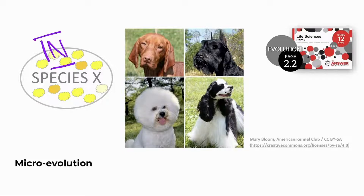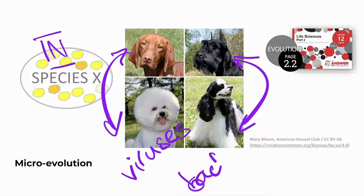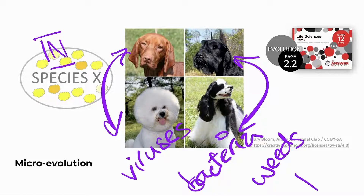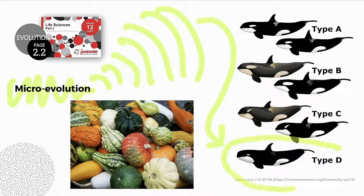How do we know if organisms are part of one species? When organisms are still able to interbreed and produce viable or fertile offspring, they are considered one species. Examples of microevolution include variation in dogs, horses, viruses that show resistance to antiretrovirals, bacteria that show resistance to antibiotics, or weeds and pests that show resistance to herbicides or pesticides. Evolutionary scientists believe that many microevolutionary changes over time can accumulate and eventually lead to macroevolution and the formation of new species.